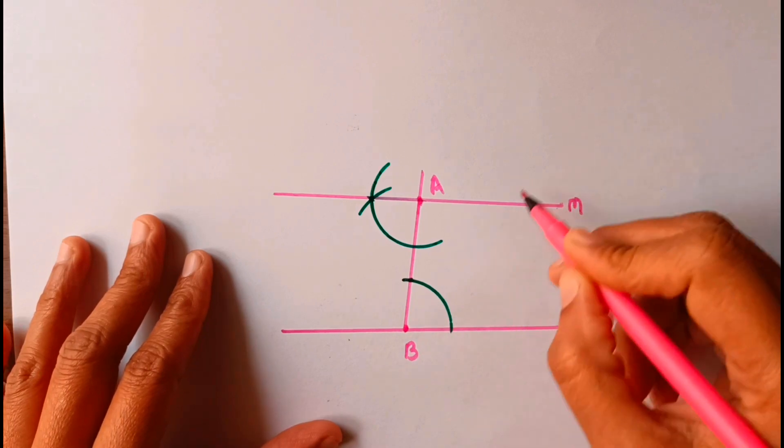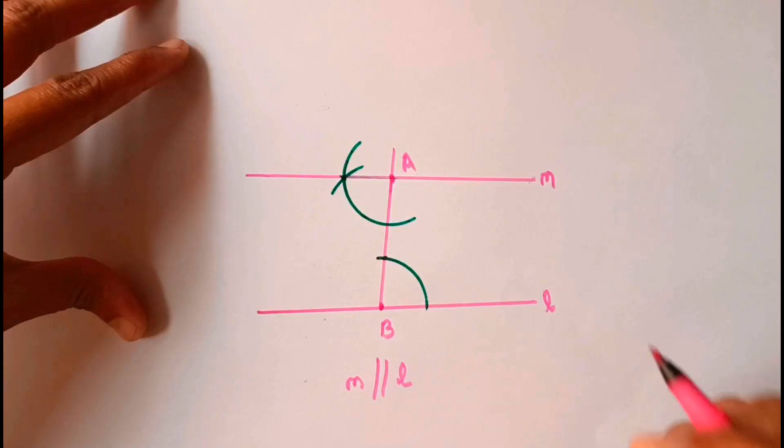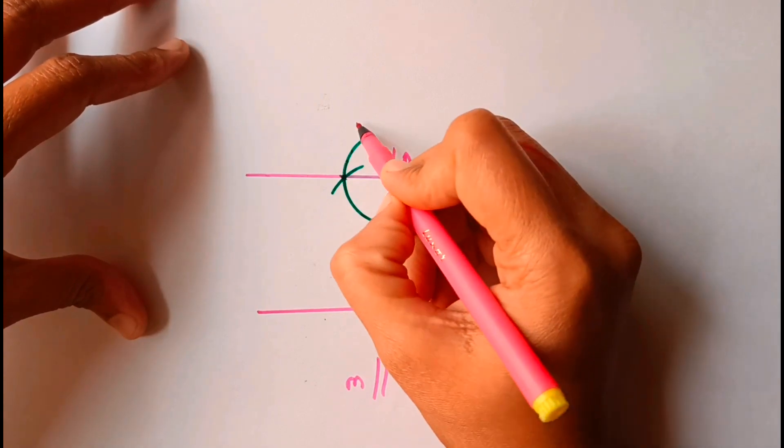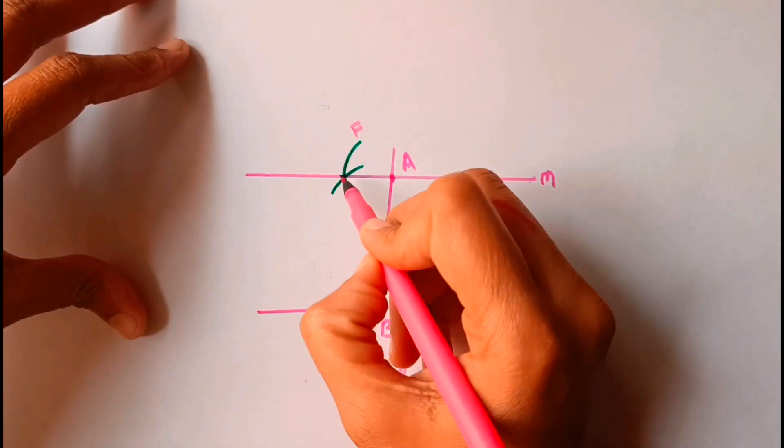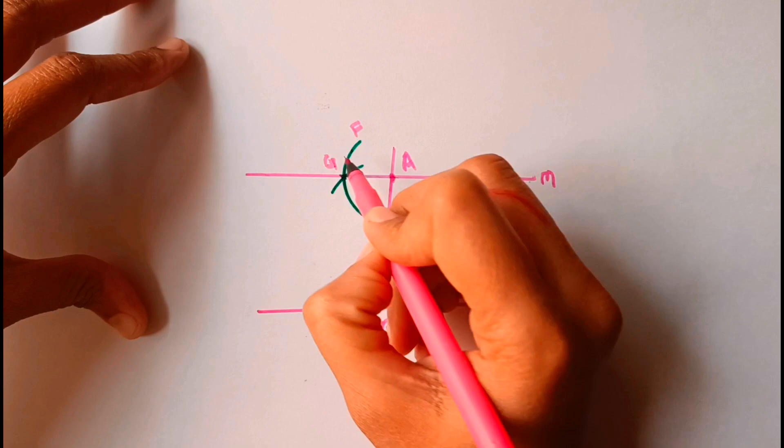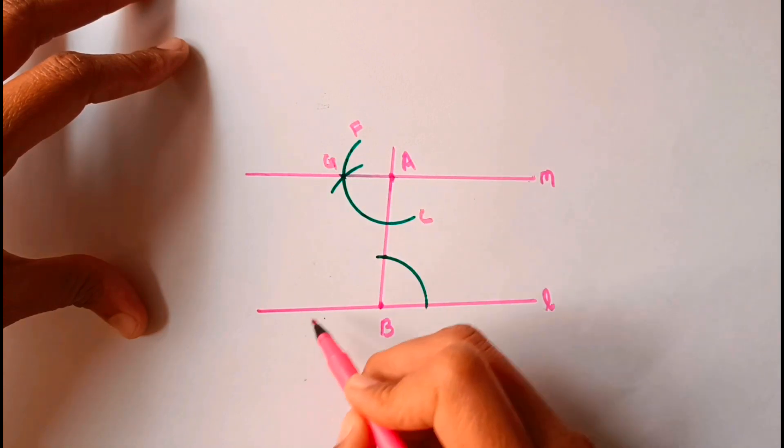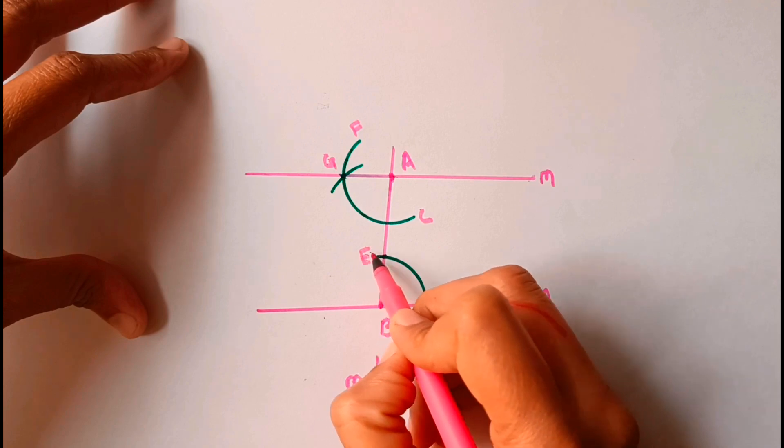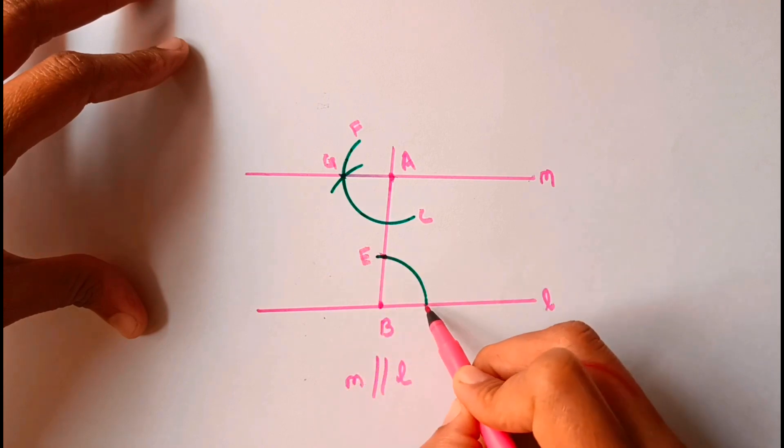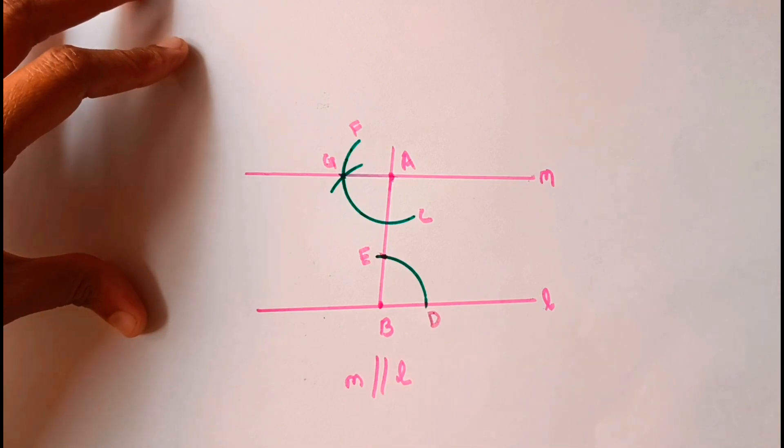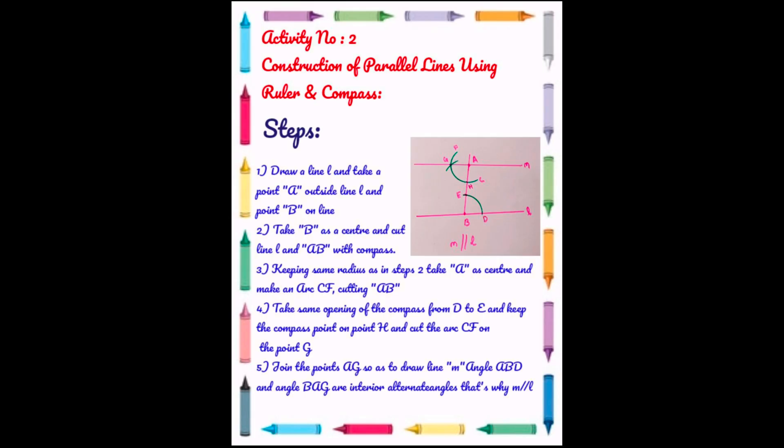Now you can name the points: this point F, this point G, this is C, this point is E, this point as D. Let's now take a close look of the page.